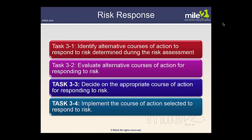The risk response tasks are: Task 3-1 — identify alternative courses of action to respond to risk determined during risk assessment; Task 3-2 — evaluate those alternative courses of action; Task 3-3 — decide on the appropriate course of action for responding to risk; and Task 3-4 — implement the selected course of action. To summarize: risk response identification, evaluation of alternatives, risk response decision, and risk response implementation. Key elements of a risk response strategy include who is responsible, dependencies on other risk responses, dependencies on technologies and timelines, plans for monitoring effectiveness, and interim response measures.